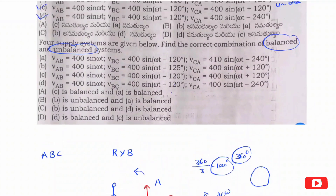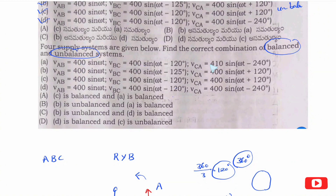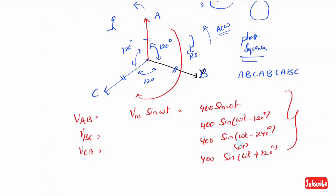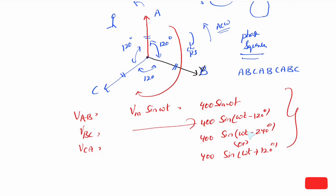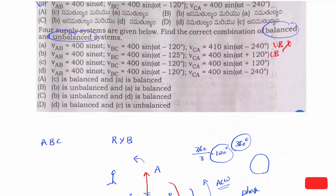So now let's try to match. V_ab is 400, but one option is 410, so that is unbalanced. Next, V_ab is 400 sin(ωt), V_bc is 400 minus 120 — but one option has 400 minus 125, so that is unbalanced. Looking at another option: V_ab is 400, V_bc is 400 minus 120 — this is the balanced system.